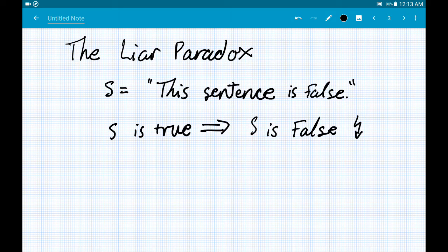So, this must mean that S is false, right? If being true implies a contradiction, then S must be false.